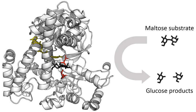Organic prosthetic groups can be covalently bound, e.g., biotin in enzymes such as pyruvate carboxylase. An example of an enzyme that contains a cofactor is carbonic anhydrase, which is shown in the ribbon diagram with a zinc cofactor bound as part of its active site. These tightly bound ions or molecules are usually found in the active site and are involved in catalysis. For example, flavin and heme cofactors are often involved in redox reactions. Enzymes that require a cofactor but do not have one bound are called apoenzymes or apoproteins. An enzyme together with the cofactors required for activity is called a holoenzyme, which can also be applied to enzymes that contain multiple protein subunits, such as the DNA polymerases.